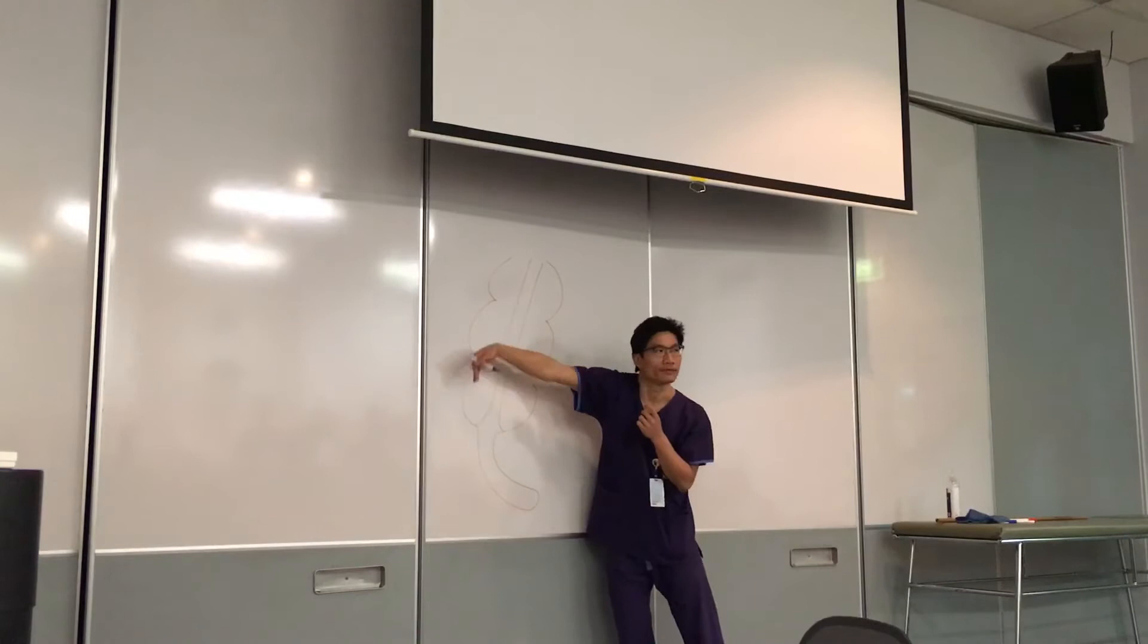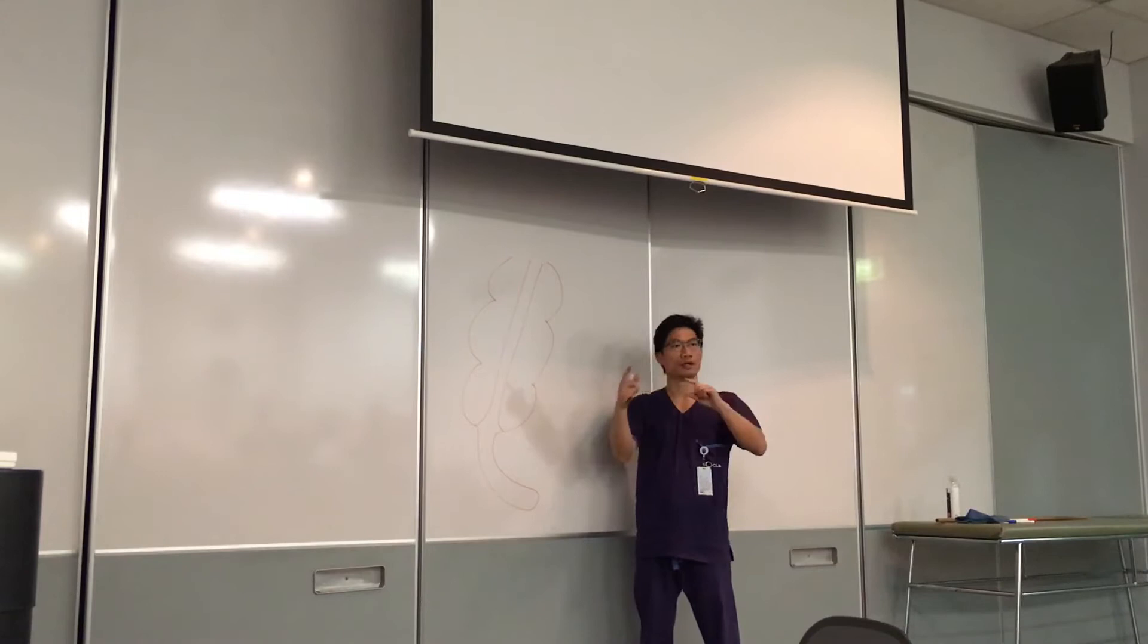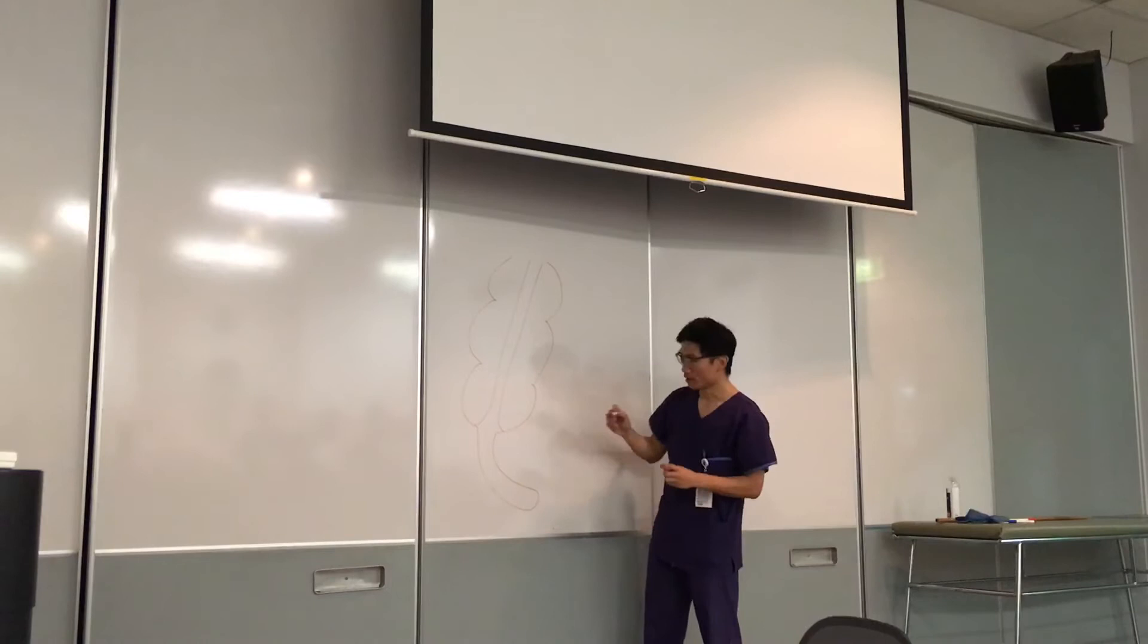It's kind of disappeared, but you get another one on that side. You get one more. There's taenia coli. So maybe at 12, 4, and 8 o'clock position. But no matter where you look, it will still converge back into this area.